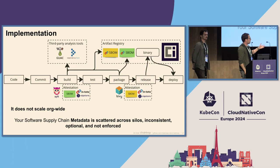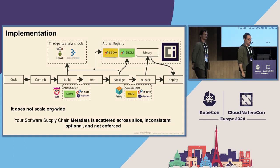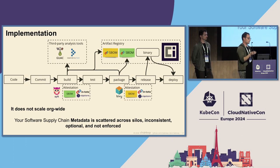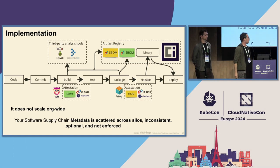But you might be thinking: this is hard to scale. Because what I showed is one pipeline, and usually the responsibility is delegated to the development team. How do you scale this for an organization without having metadata scattered across silos? They may be choosing different artifact registries, using inconsistent tools or different formats. And of course, it's hard to enforce the generation of that metadata — you could disable SBOM generation at some point and the release would still go through.